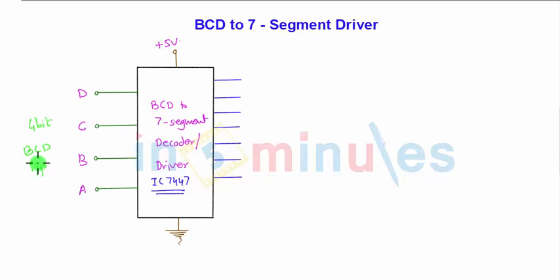That is nothing but binary coded decimal input and at the output side we have 7 segments. So segment A, B, C, D, E, F and G and decimal point we are not designing for here.